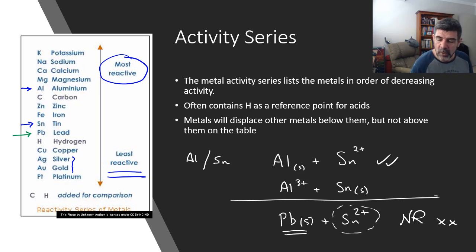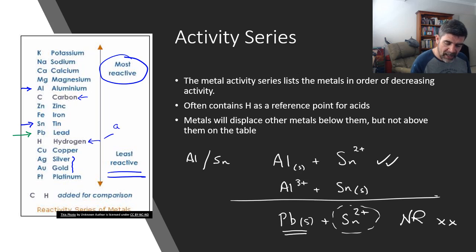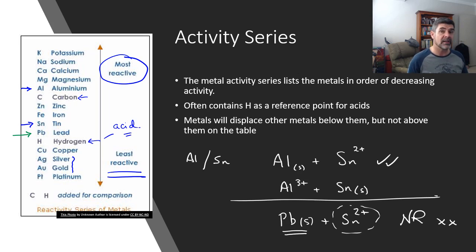One quick thing before I leave this: you'll notice that both carbon and hydrogen are sometimes included in activity series tables just as a comparison. Hydrogen is particularly useful when we're analyzing the reactions which occur between metals and acids, because it's the hydrogen ions in solution that are displaced. Thanks for watching.